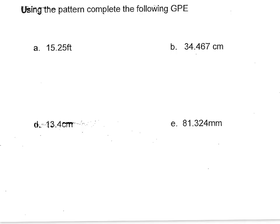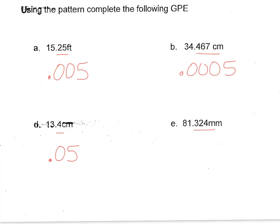So if we use this shortcut: notice there's two numbers after the decimal point, so the greatest possible error is going to be 0.005. For this one, there's three numbers after the decimal point, so the greatest possible error is going to be 0.0005. Here, there's one number after the decimal point, so it's going to be 0.05. And in this one, there's three numbers after the decimal point, so it's going to be three zeros and then a five, 0.0005. So that's the shortcut for how to find the greatest possible error.